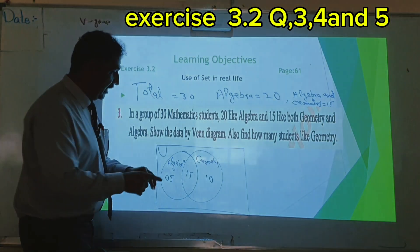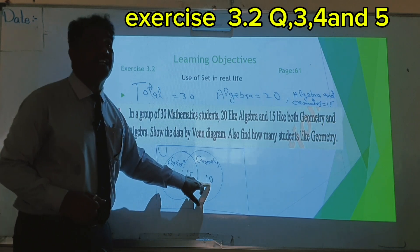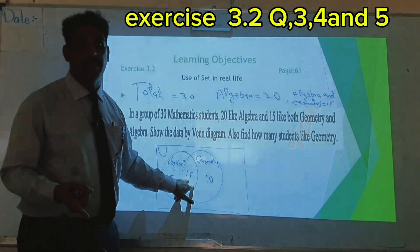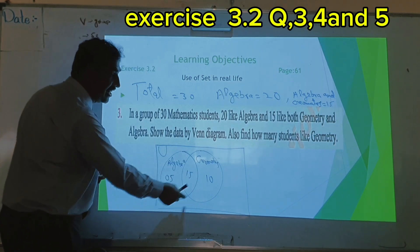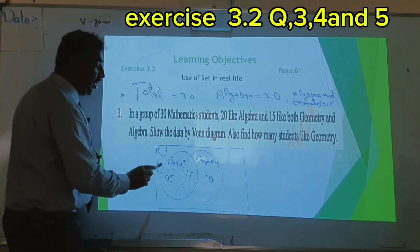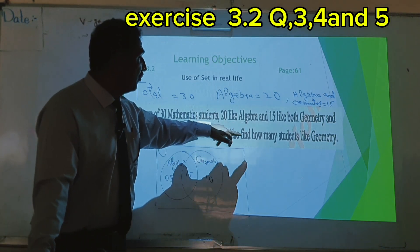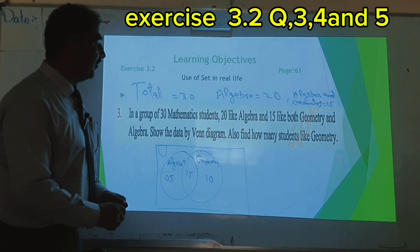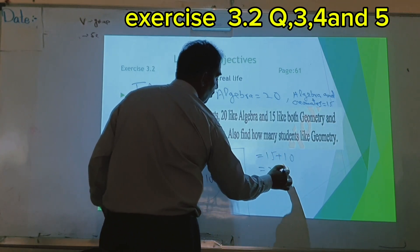So 15 plus 10 gives 25 students who like geometry. 20 students are good in algebra, 15 are good in both algebra and geometry. How many are good in algebra? 15 plus 5 = 20. How many good in geometry? 25. How many good in both algebra and geometry? 15. So 15 plus 10 equals 25 for geometry.